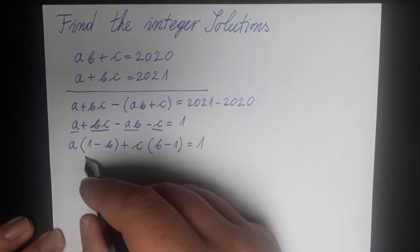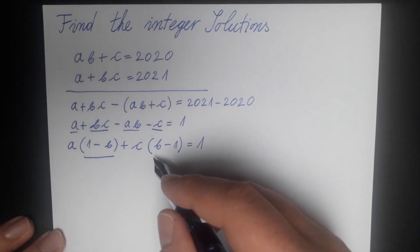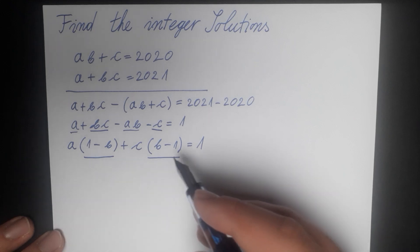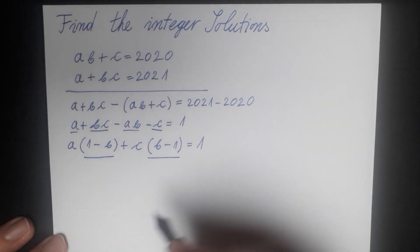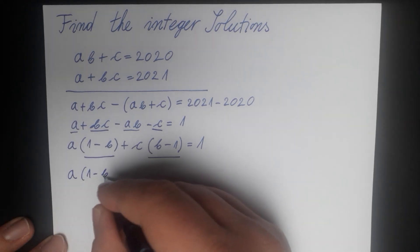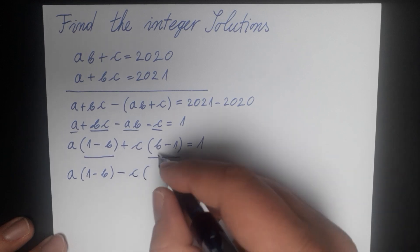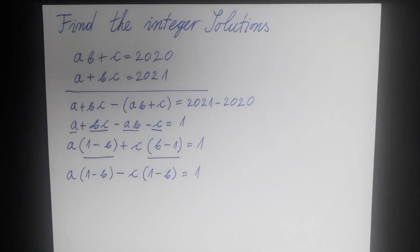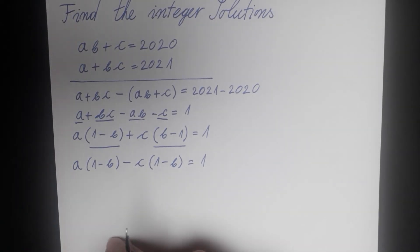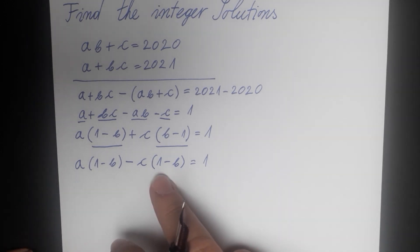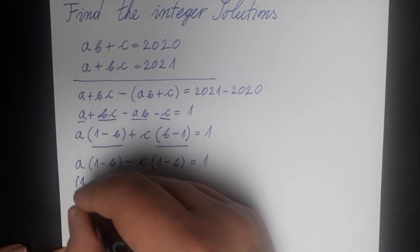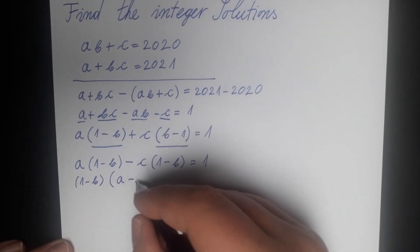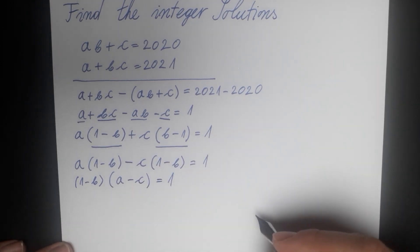As you can see, we have (1 minus b) in the first bracket and (b minus 1) in the second bracket. Let's take negative 1 in front of the second bracket, which gives us (1 minus b) in that position as well. So we have a(1 minus b) minus c(1 minus b) equal to 1. Now (1 minus b) is a repeating pattern, so we can take it as a common factor, giving us (1 minus b)(a minus c) equal to 1.